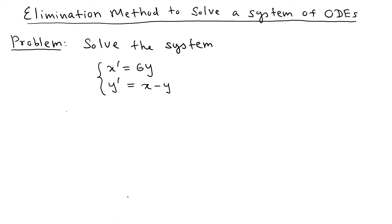The problem is that when you get a system like that, you cannot solve one equation alone. You cannot just solve the first equation because there is a y term — y depends on the other equation. So what you have to do is remove one variable. We need to get an equation in only one variable, solve that, and then use that answer to solve for the other one.